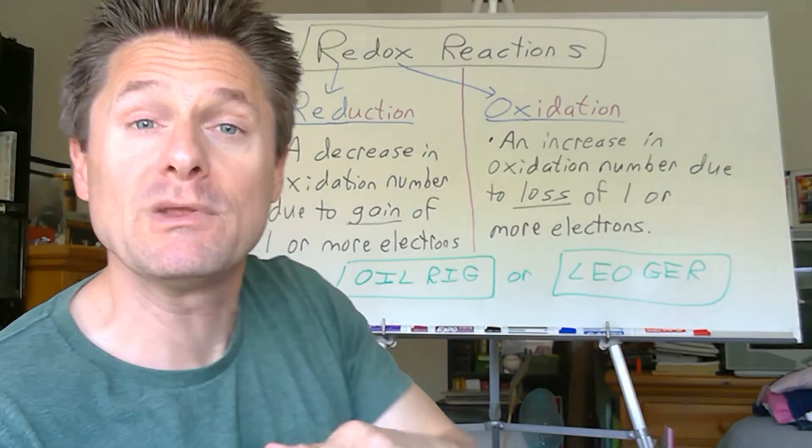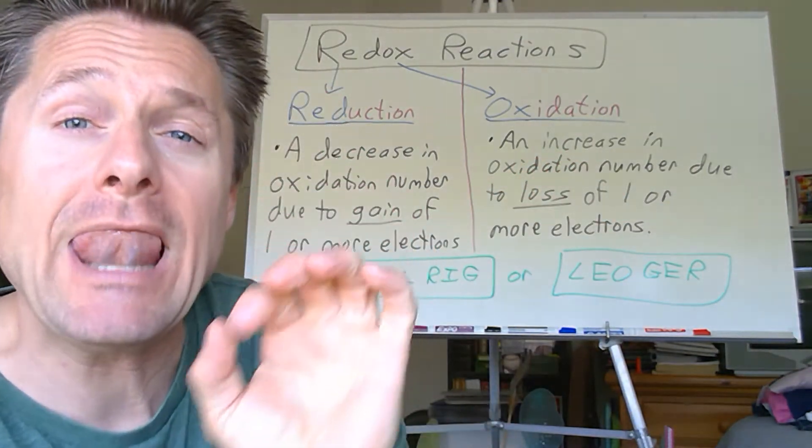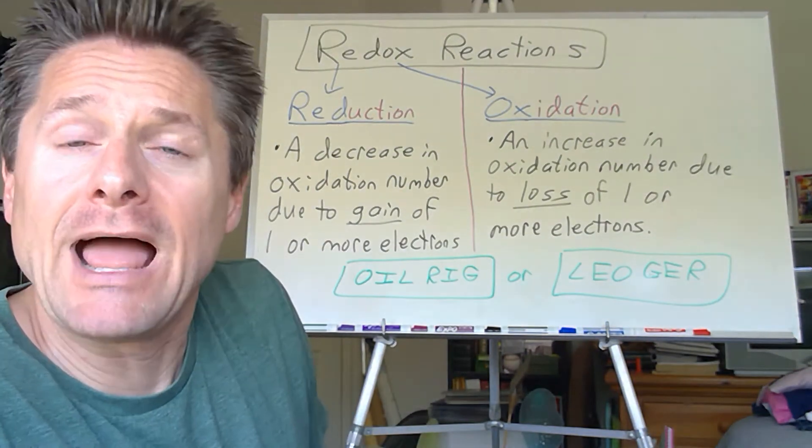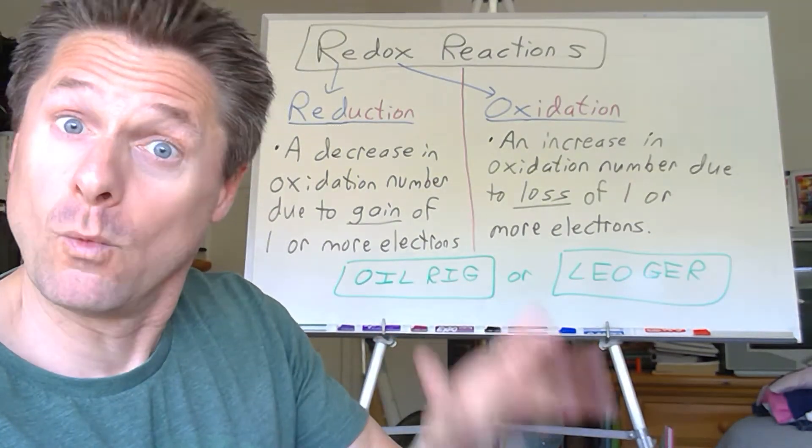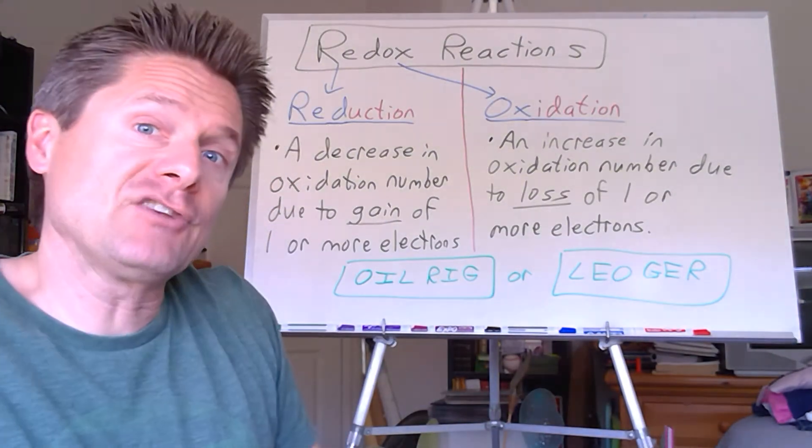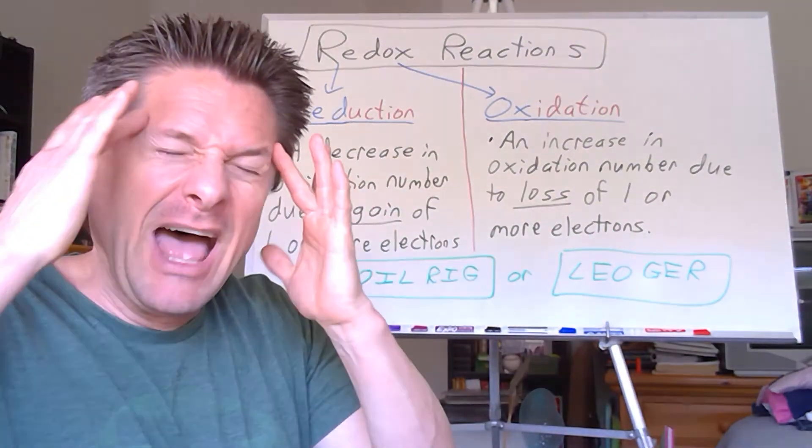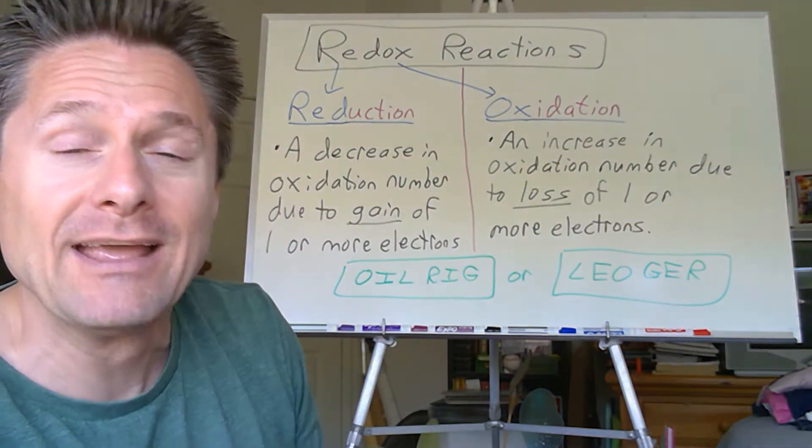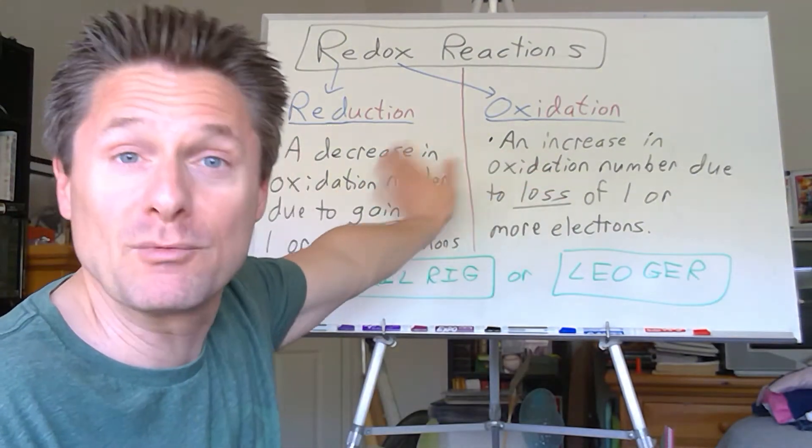So a decrease in oxidation number on a particular element, atom of an element, due to gain of one or more electrons. And the exact opposite of that is oxidation. So if reduction means to go down, oxidation means to go up. That's an increase in oxidation number due to a loss of one or more electrons. So if I have an oxidation number one and I lose an electron, I lose a negative particle, I just went up to two. That's oxidation in general chemistry. If I was at a negative two and I lose an electron, I go to negative one. So that still is going up, even though it's in negative numbers. It's oxidizing.